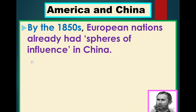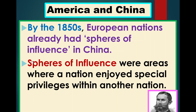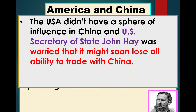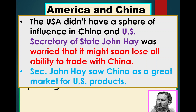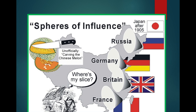With China, we have what is known as the Open Door Policy. By the 1850s, European nations had already established spheres of influence in China — areas where a nation enjoyed special privileges within another nation. The U.S. doesn't have a sphere of influence in China, and Secretary of State John Hay wants to set up one. America will institute the Open Door Policy. We see Russia, Germany, Britain, and France all carving up China — now America wants its slice, and it gets that with the Open Door Policy.